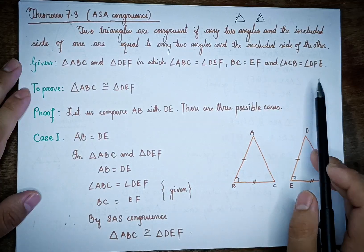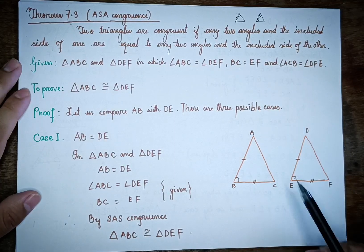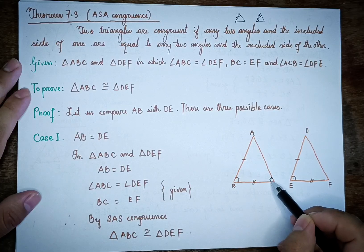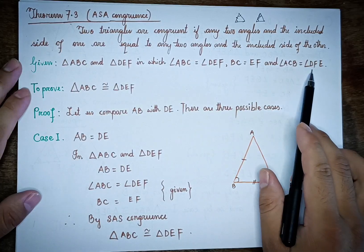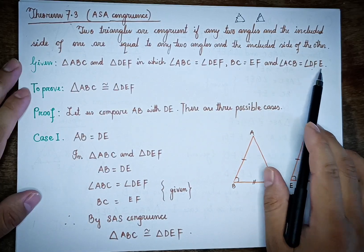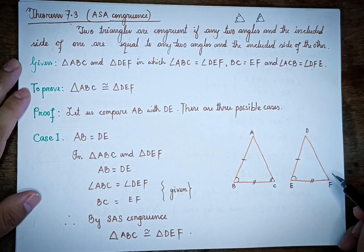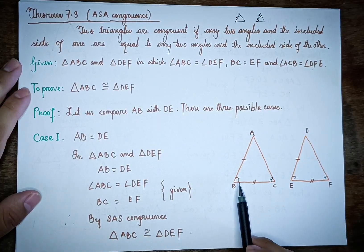The other given condition is angle ACB equals angle FDE. So angle DFE is also given. These are the two angles and included side conditions for our proof.